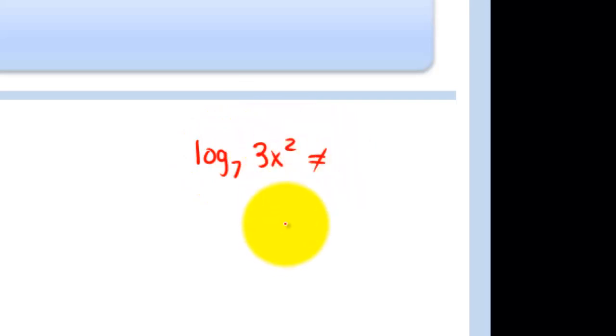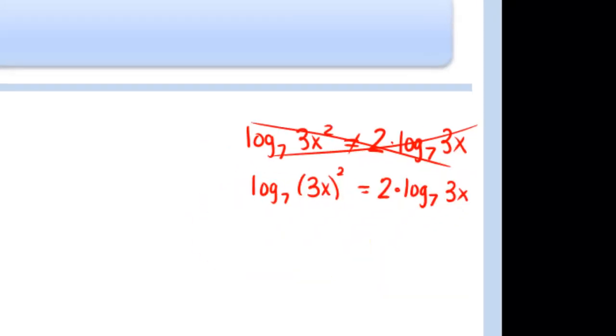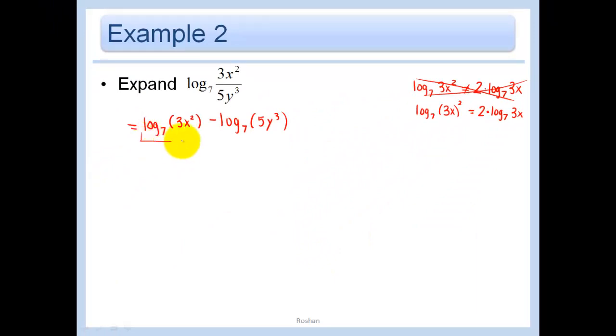now be very careful here log base 7 of 3x squared is not equal to 2 times log base 7 of 3x no way the reason is because it's not log base 7 of 3x the quantity squared this is equal to 2 times log base 7 of 3x this is true but that's not what they're asking me in this problem